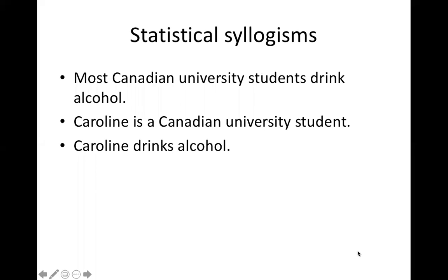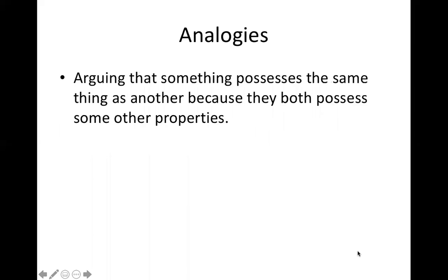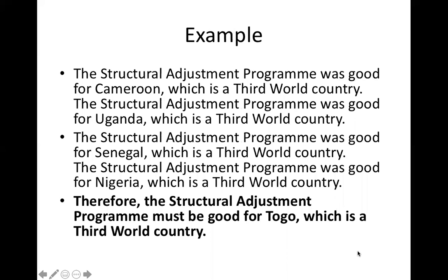Statistical syllogisms example: 'Most Canadian university students drink alcohol. Caroline is a Canadian university student. Therefore, Caroline drinks alcohol.' The argument actually has two conclusions — you can also say Caroline doesn't drink alcohol. Then we have analogies: arguing that something possesses the same property as another because they share other properties. The structural adjustment program was good for Cameroon, Uganda, Senegal, and Nigeria — all third-world countries. Therefore, it must be good for Togo, which is also a third-world country. This is argument by analogy.